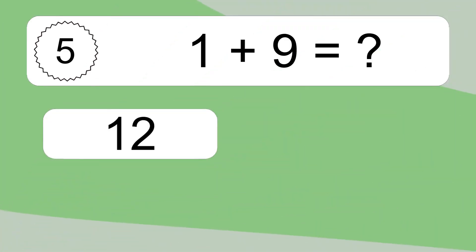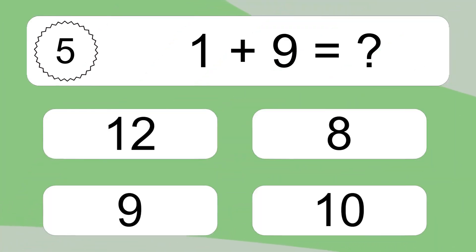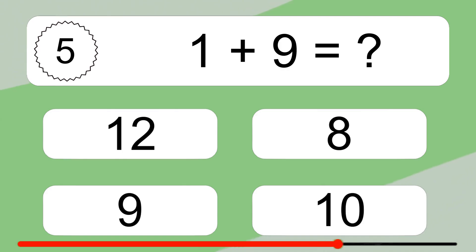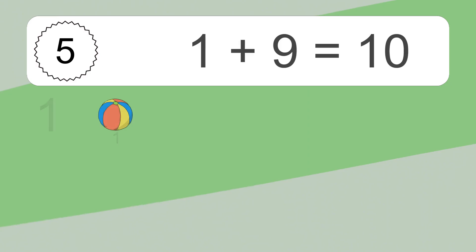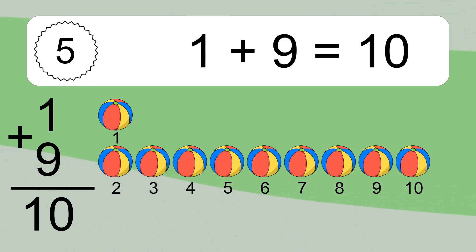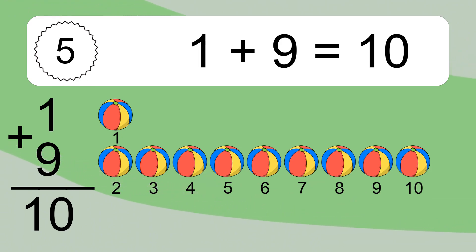1 plus 9 equals what? 1, 2, 3, 4, 5, 6, 7, 8, 9, 10. 1 plus 9 equals 10. Let's count it. 1, 2, 3, 4, 5, 6, 7, 8, 9, 10.